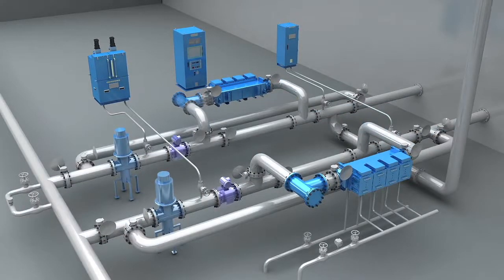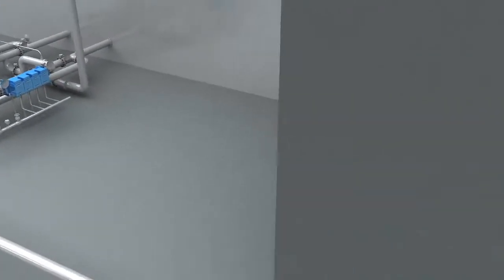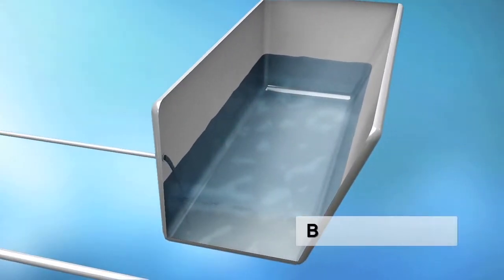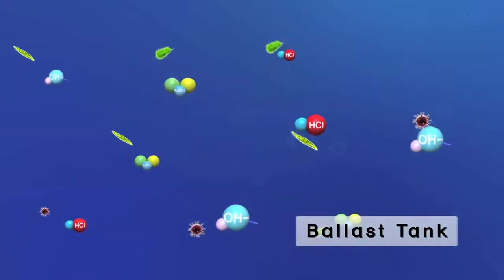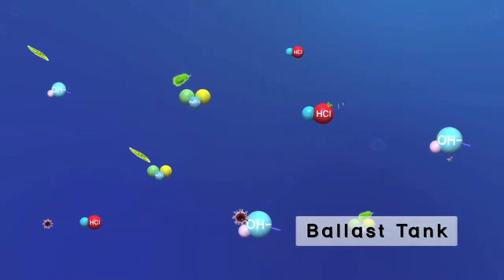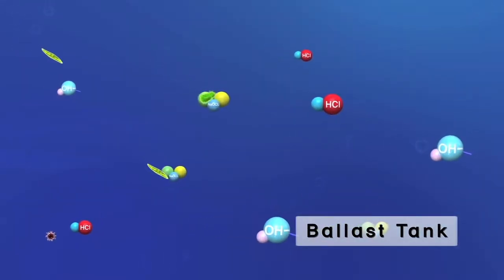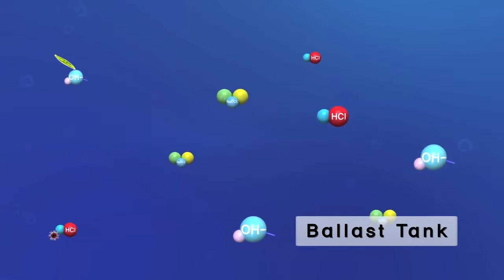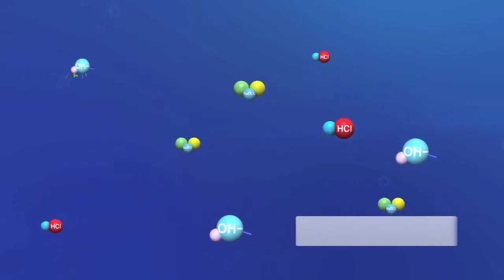After treatment, the treated ballast water is stored in the ballast tank during the voyage. During this period, TRO, the residual hypochlorite, remains active in the ballast tank, preventing any regrowth of microorganisms for up to 30 days after treatment.